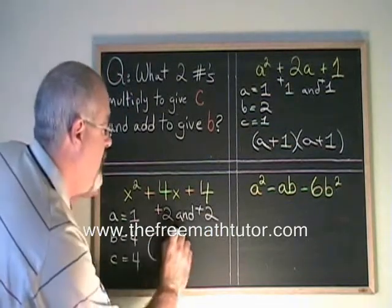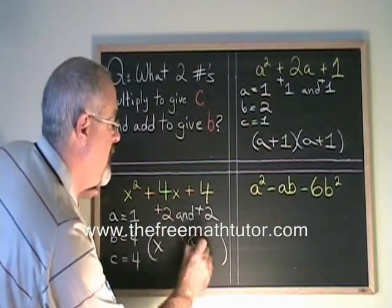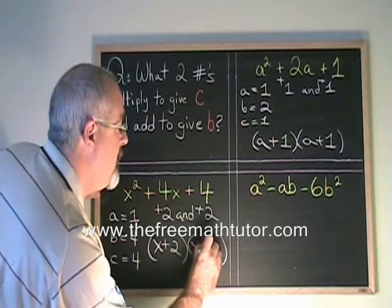I write my brackets. The square root of x squared is x. So I put an x in both of these positions. And then I have plus 2 and plus 2.